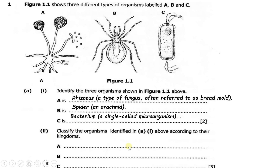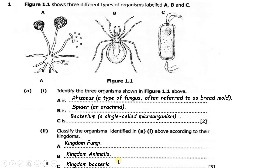Part 2 says: classify the organisms identified in part 1 according to their kingdoms. So we now classify these organisms which have been identified. The Rhizopus belongs to the kingdom known as Fungi. The spider belongs to the kingdom called Animalia. The bacterium belongs to the kingdom called Bacteria.